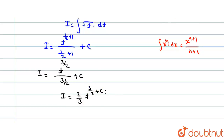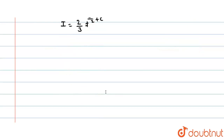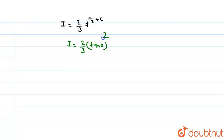Now put the value of t back into the integration. Since t = tan x, we get I = (2/3)(tan x)^(3/2) + C. This is our final integration of question number one.